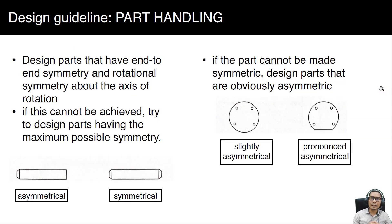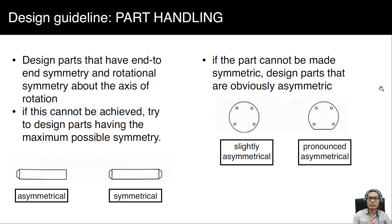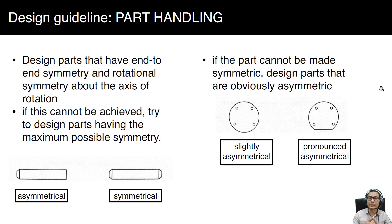The design guideline on part handling: design parts that have end-to-end symmetry and rotational symmetry about the axis of rotation. If this cannot be achieved, try to design parts with the maximum possible symmetry. It is better to design a part which is symmetrical, or if it cannot be symmetrical, try to be as close as possible to symmetry, to ease the assembly process.